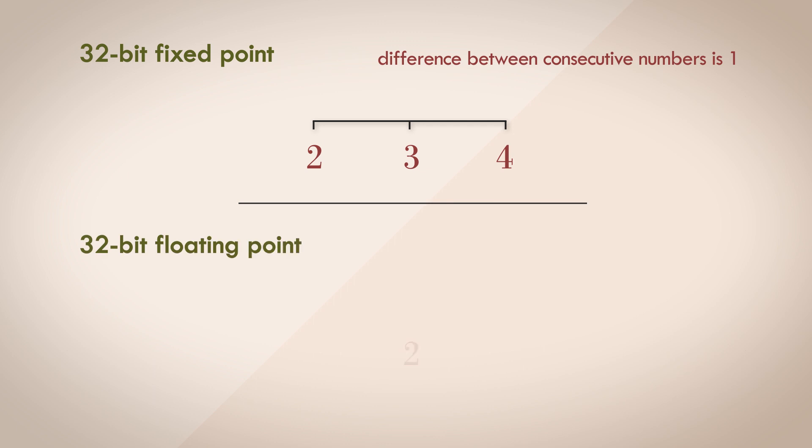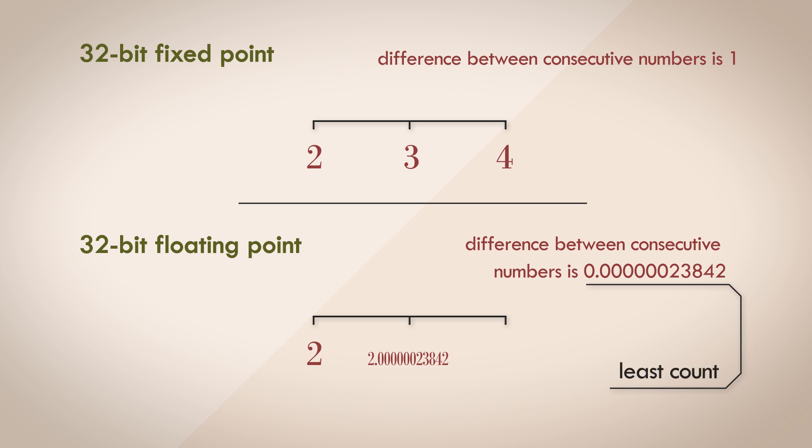What about floating point format? What's the next representable number after 2? It's this number. Now we'll get to where this number comes from, but you can see that the loss of precision is not really a problem here for floating point format. It's got a really fine least count, miles better than that of fixed point format.